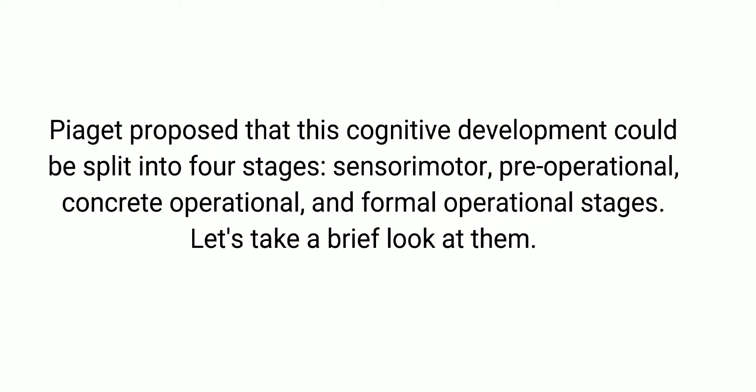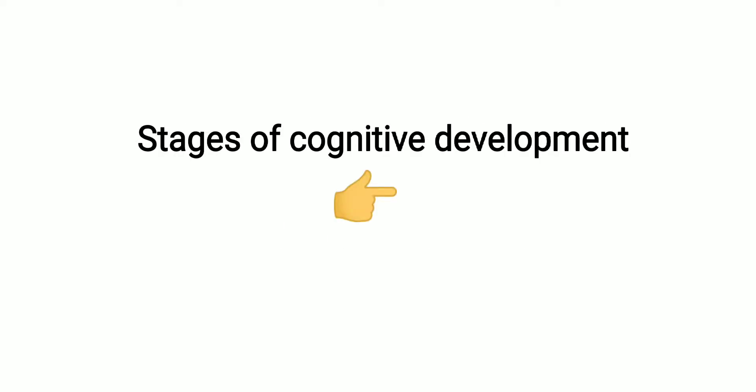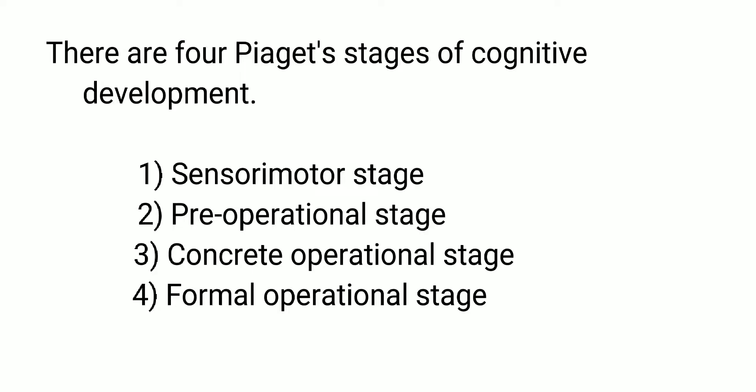Piaget proposed that this cognitive development could be split into four stages: sensorimotor, preoperational, concrete operational, and formal operational stages. There are four Piaget stages of cognitive development: 1. Sensorimotor stage, 2. Preoperational stage, 3. Concrete operational stage, 4. Formal operational stage.